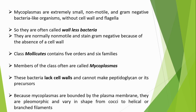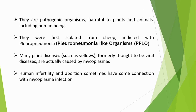Because Mycoplasmas are bounded only by the plasma membrane, they are pleomorphic and vary in shape from coccoid to helical or branched filaments. These are pathogenic organisms harmful to plants and animals including human beings. They were first isolated from sheep inflicted with pleuro-pneumonia.